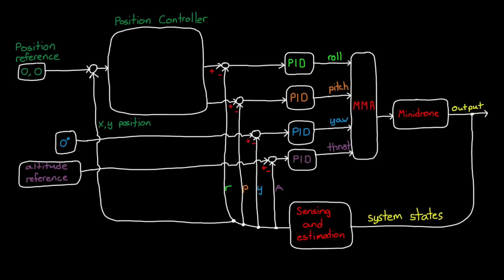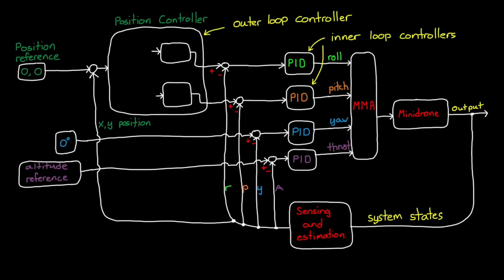So instead of us as the designer picking roll and pitch angles, we're letting the position controller create them for us. In this way, the position controller is the outer loop, and it's generating the reference commands for the inner loop roll and pitch controllers. These are cascaded loops.